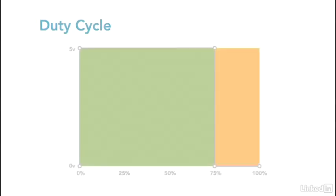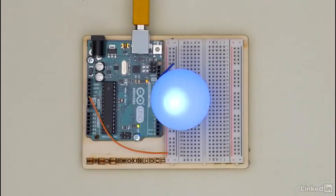If the wave was high for 75% of the period and low for 25% of the period, we would say that wave has a duty cycle of 75%. This image shows an LED turned on with the digital write command.